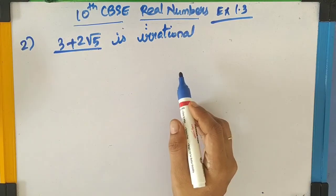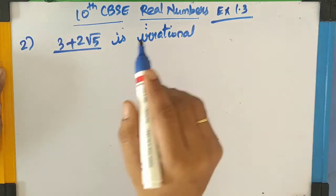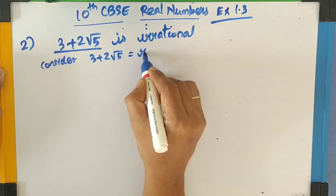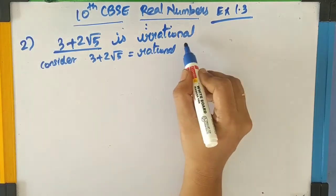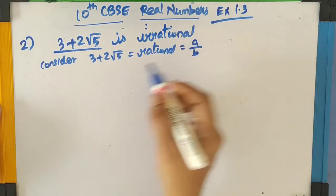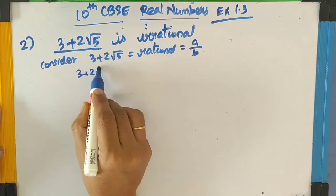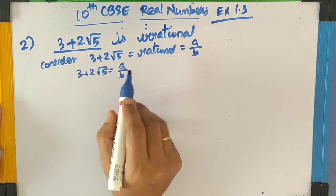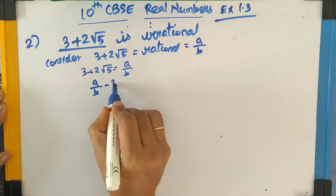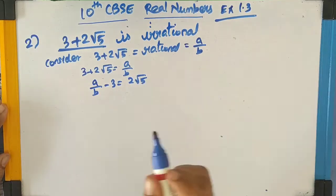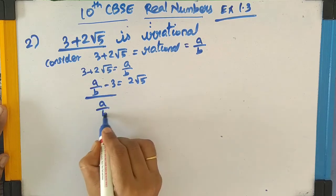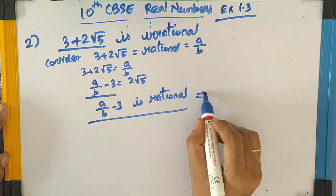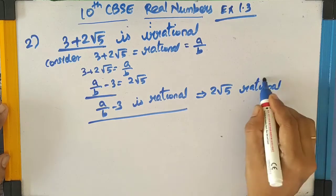Now we should prove that 3 plus 2 root 5 is irrational. As before, we have to consider 3 plus 2 square root of 5 as a rational number — the opposite case. So we assume 3 plus 2 square root of 5 equals A by B. We should leave the square root part on one side and bring the other numbers to the other side. So A by B minus 3 equals 2 square root of 5. Now we all know A by B is a rational number, so A by B minus 3 is also a rational number. When the LHS is rational, obviously the RHS should also be rational. So 2 square root of 5 is a rational number.